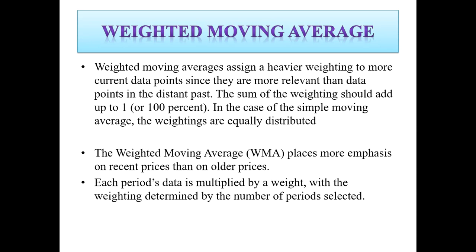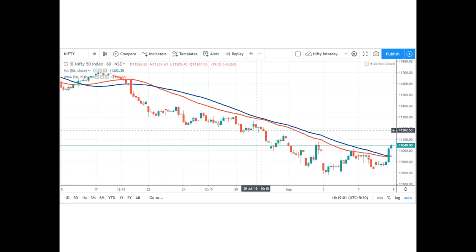Weighted moving averages assign a heavier weighting to more current data points since they are more relevant than data points in the distant past. The sum of the weightings should add up to one, or 100%. In simple moving averages the weightings are equally distributed, whereas the weighted moving average places more emphasis on recent prices. Each period's data is multiplied by a weight determined by the number of periods selected.